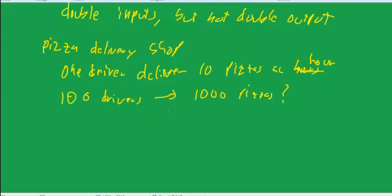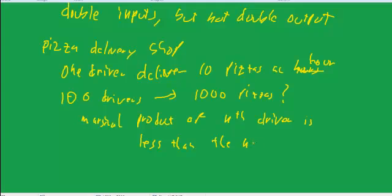So the point there is that the marginal product of the nth driver—the additional pizzas that the nth driver, let's say the 40th driver, can deliver for us—is less than the n minus 1th driver, and that's diminishing marginal returns.